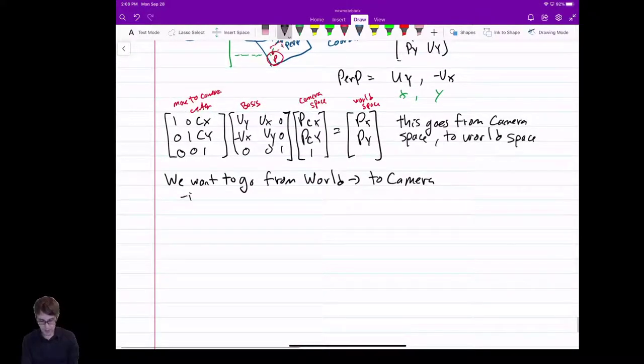So to do this, we need the inverse, right? So I take a world space coordinate, I give the inverse, I get my camera space. Now let's work through this. Now remember, always apply the matrices in reverse order.